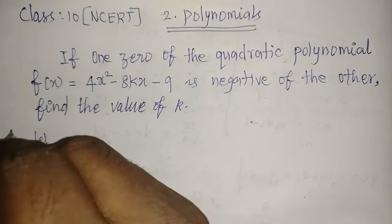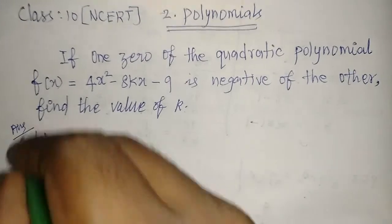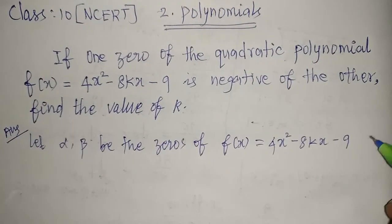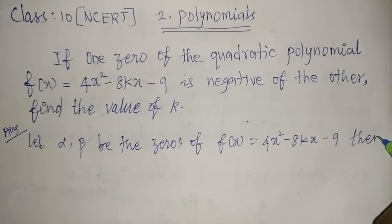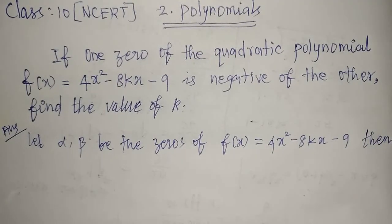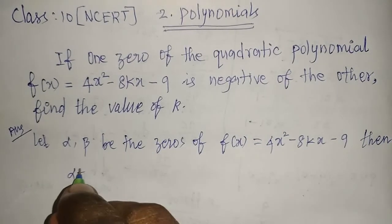First, we'll take the zeros. Let alpha and beta be the zeros of f(x) = 4x² - 8kx - 9. Then, what is alpha plus beta?